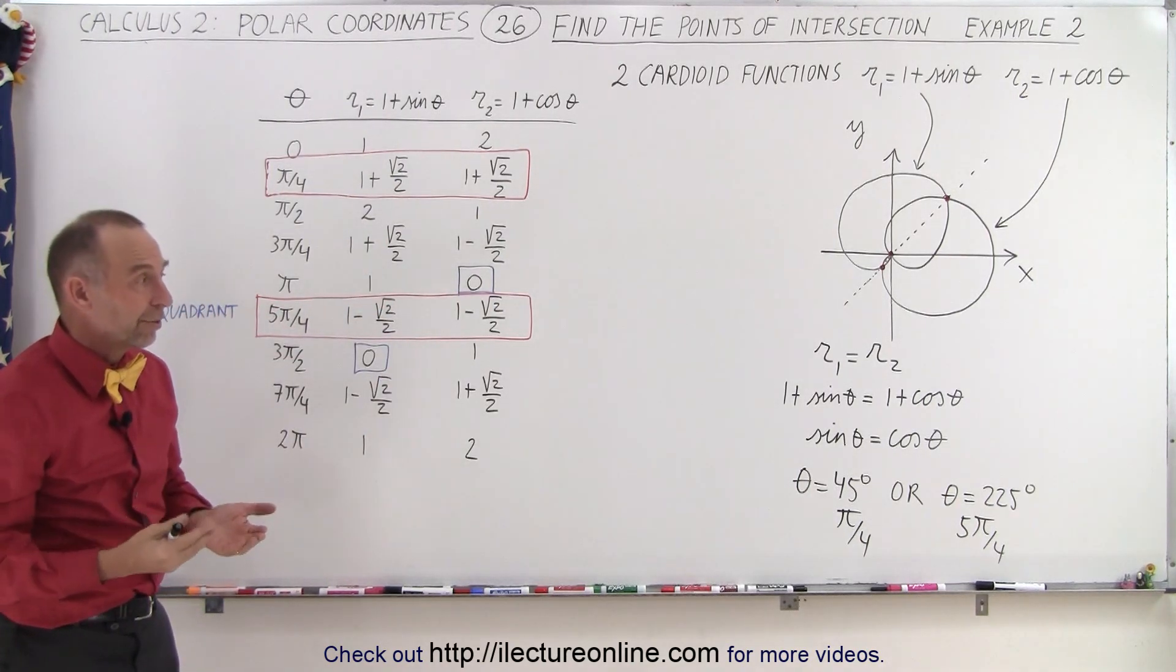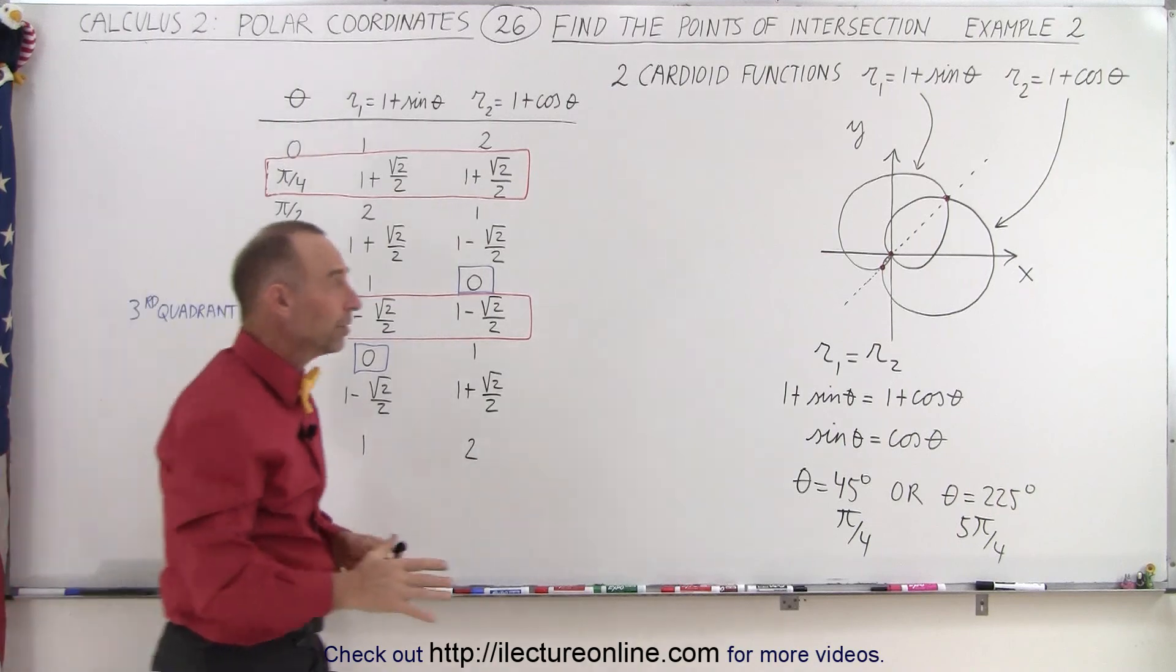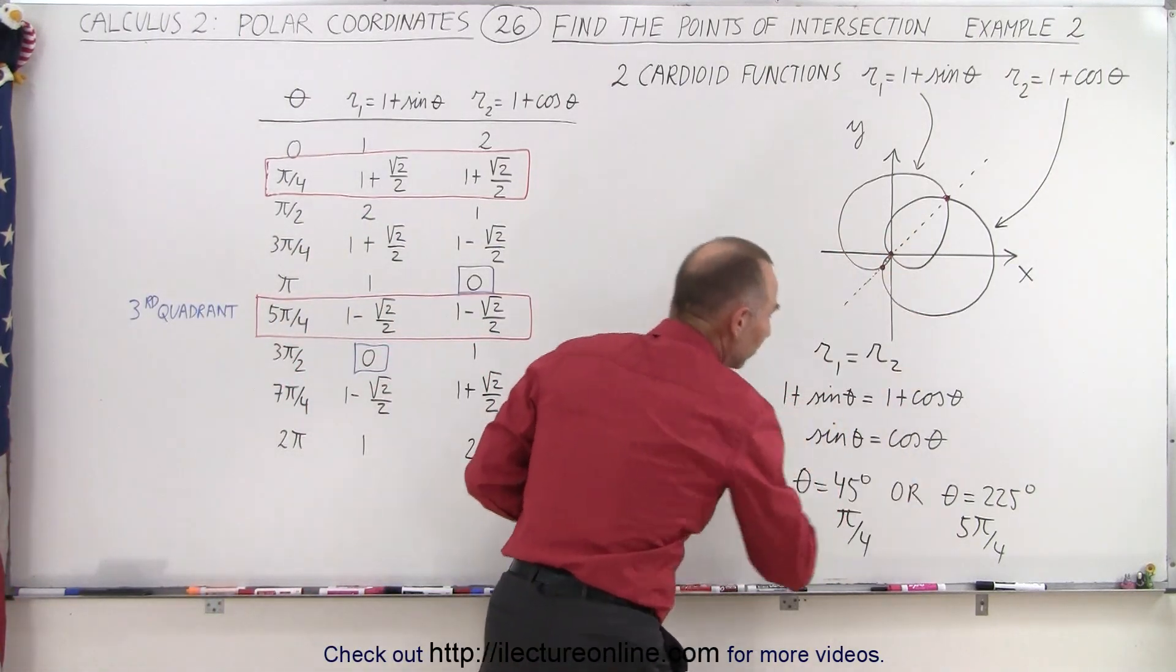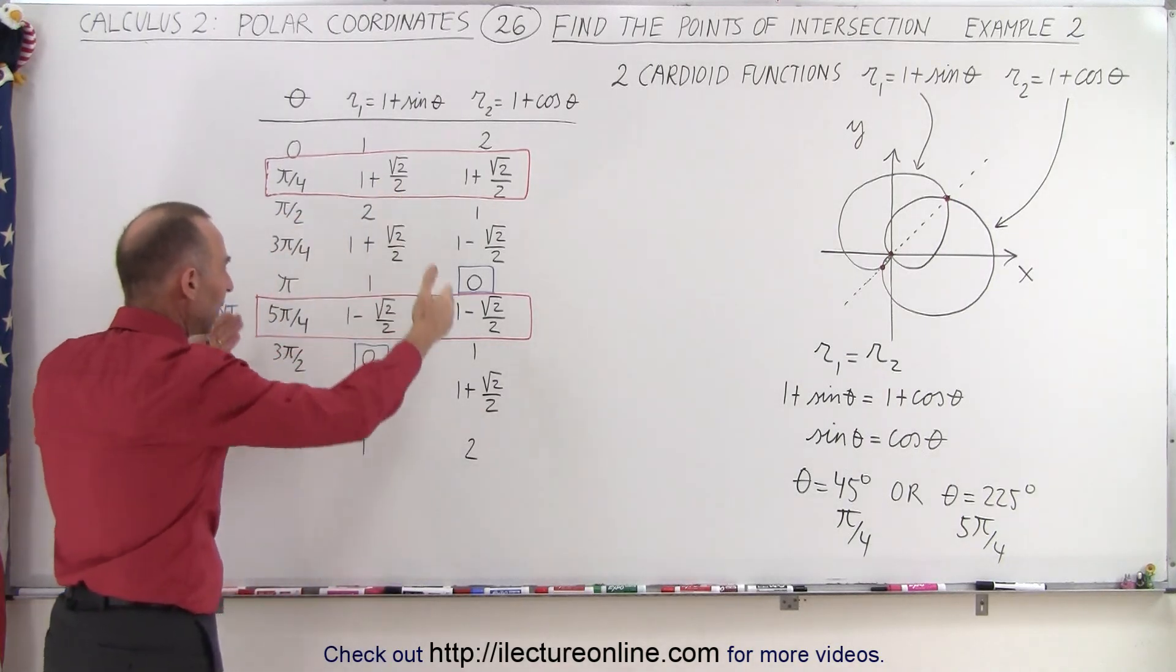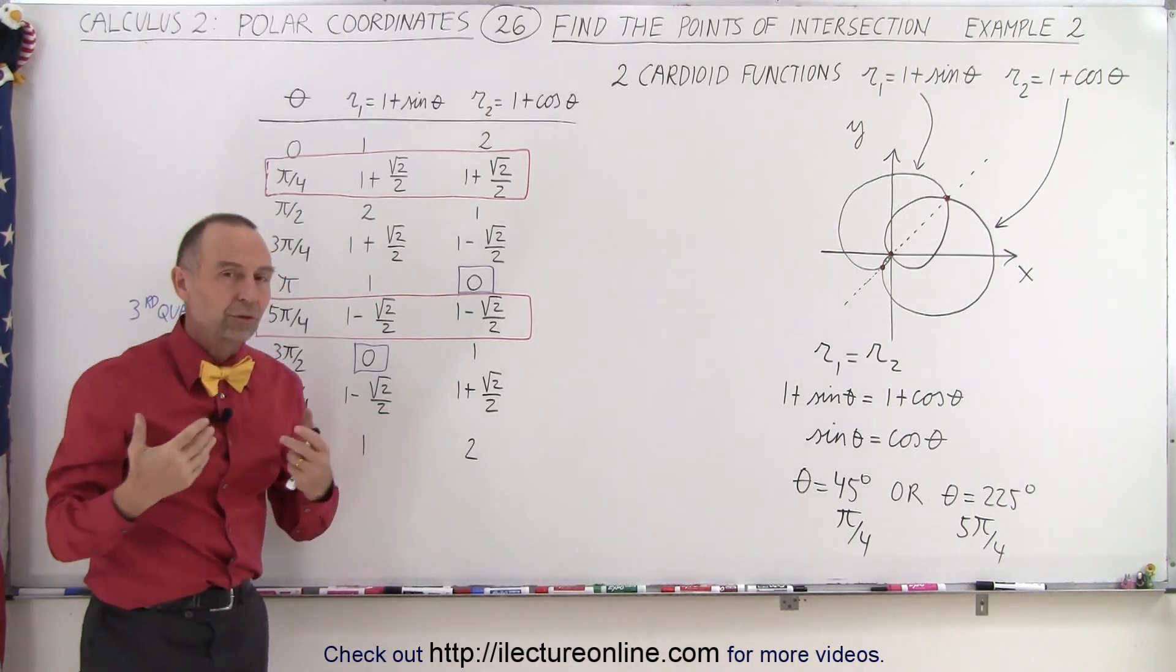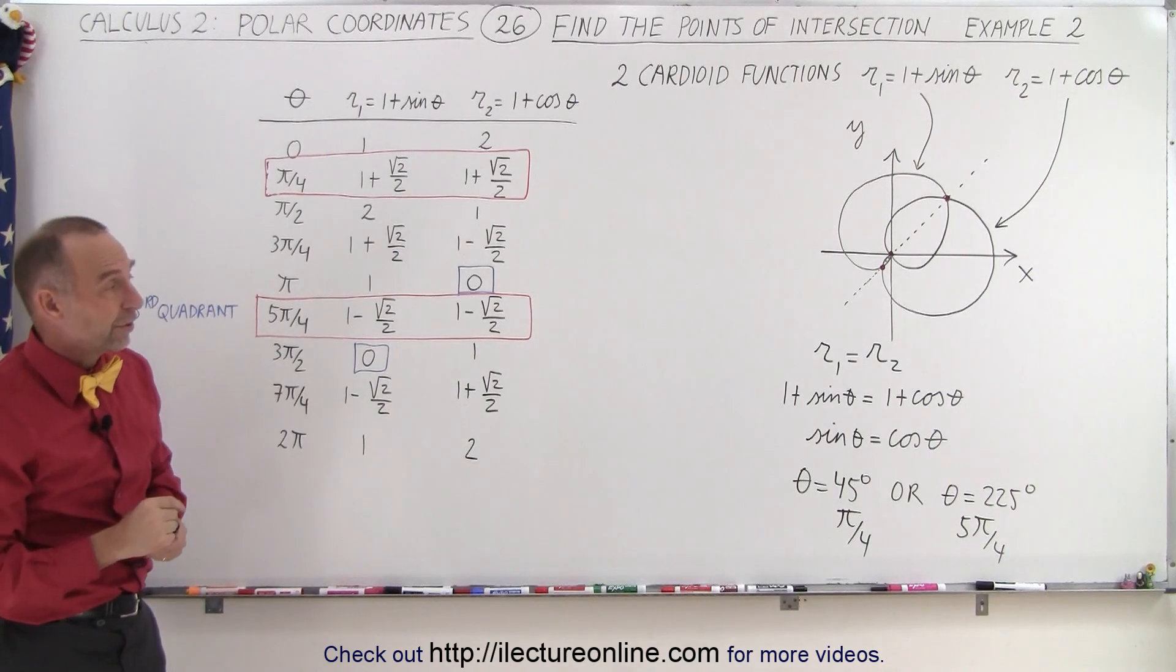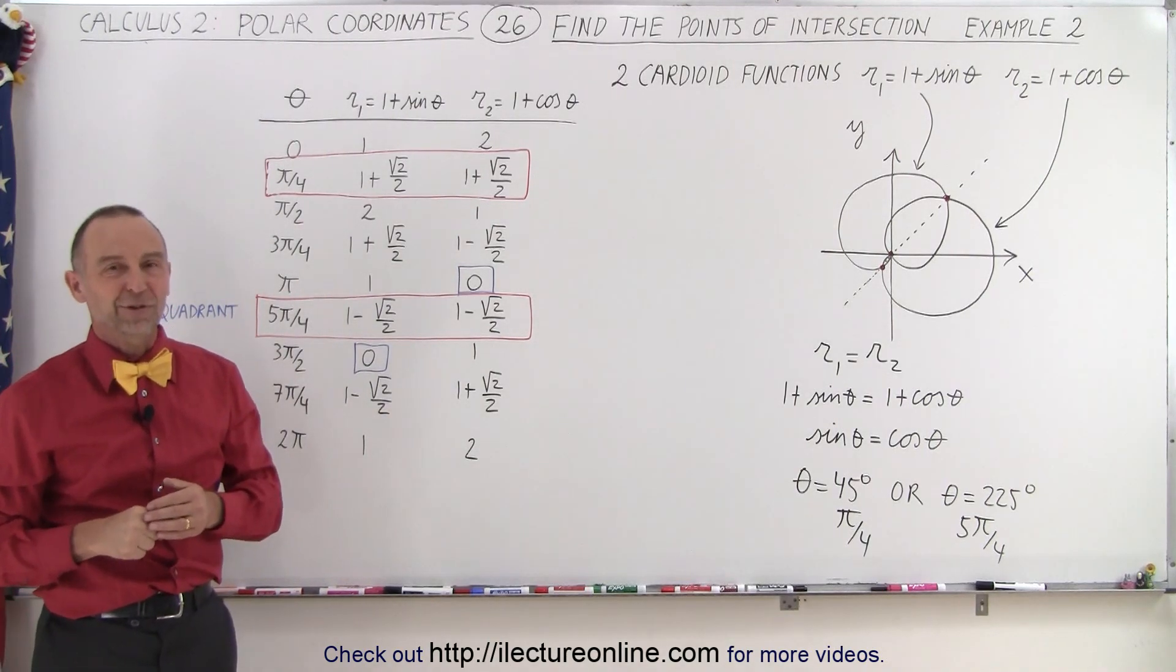But at least now we realize when we do all the techniques together, we graph the functions, we set the two equations equal to each other and solve it trigonometrically, and then we set up a table of values. We're almost certainly to find all the points of the intersection like we did in this case. And that's how it's done.